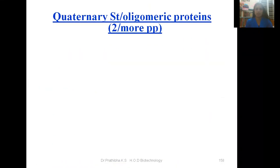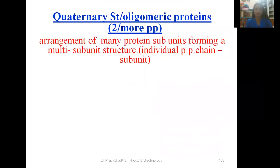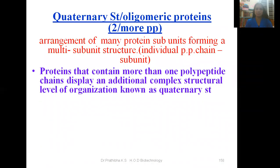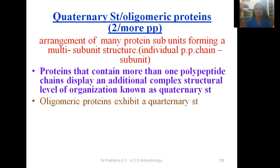This quaternary structure can also be known as oligomeric proteins. Here you can see the presence of two or more polypeptide chains, with the alignment of many protein subunits forming a multi-subunit structure. In this quaternary structure, individual polypeptide chains are known as subunits. Proteins that contain more than one polypeptide chain display an additional complex structural level known as quaternary structure, also known as oligomeric proteins.